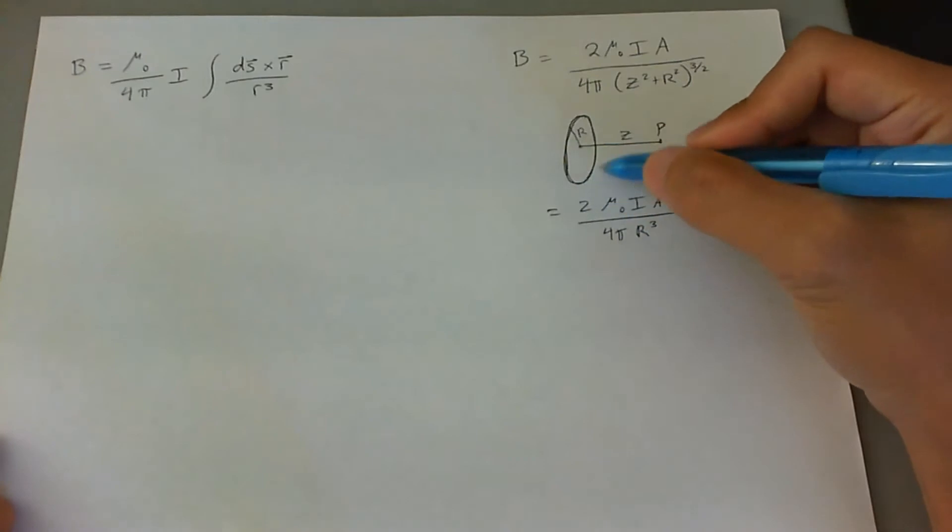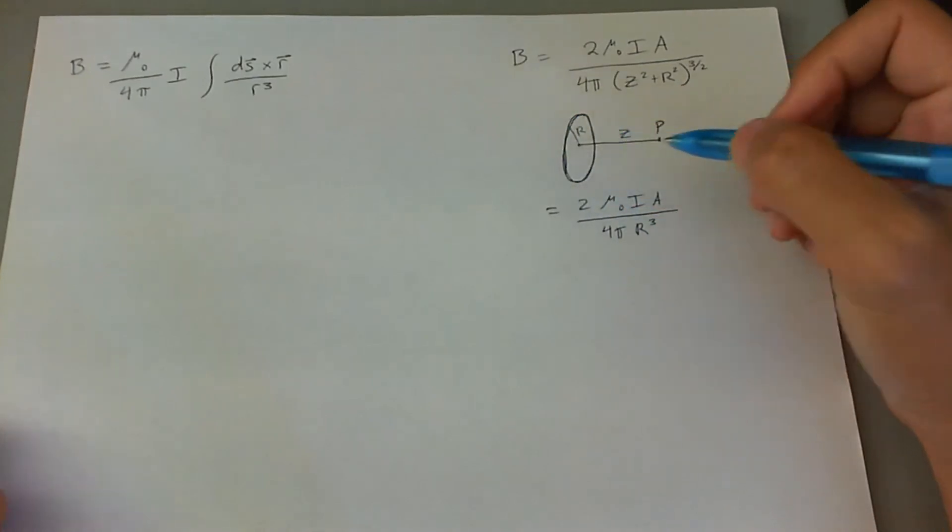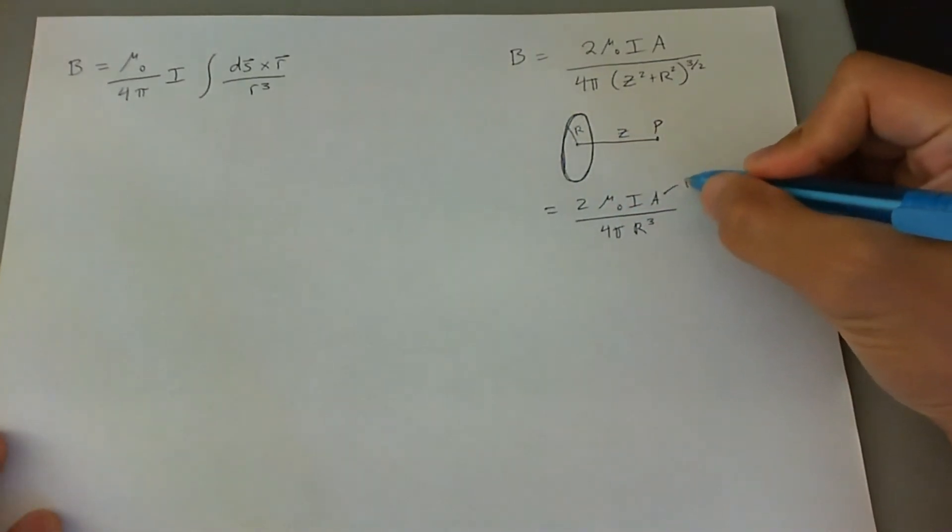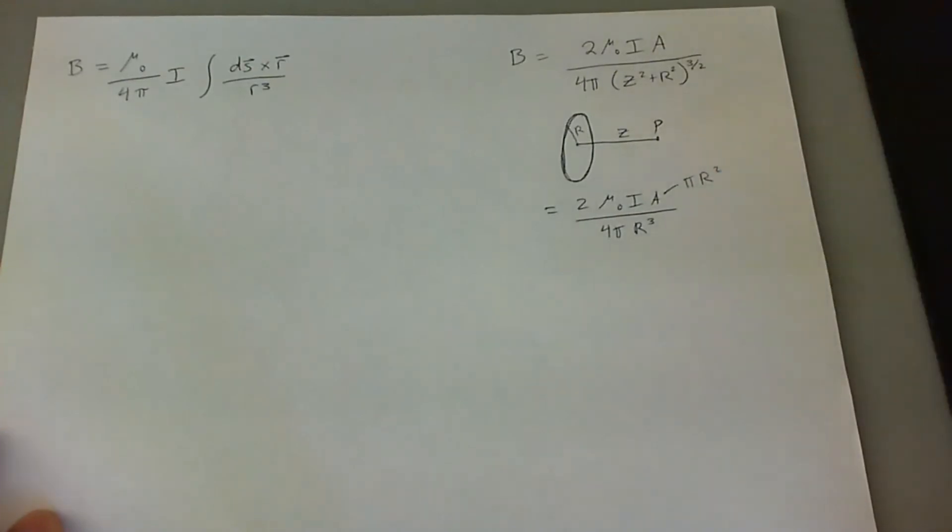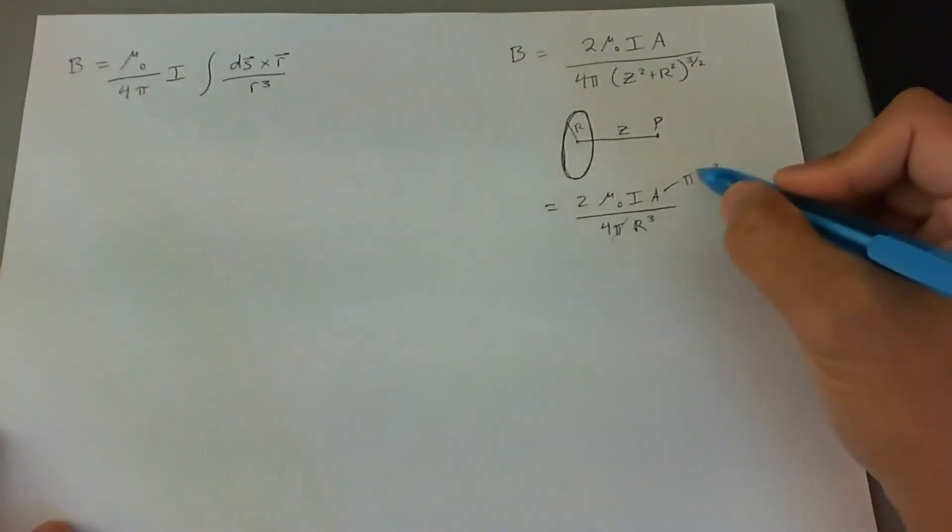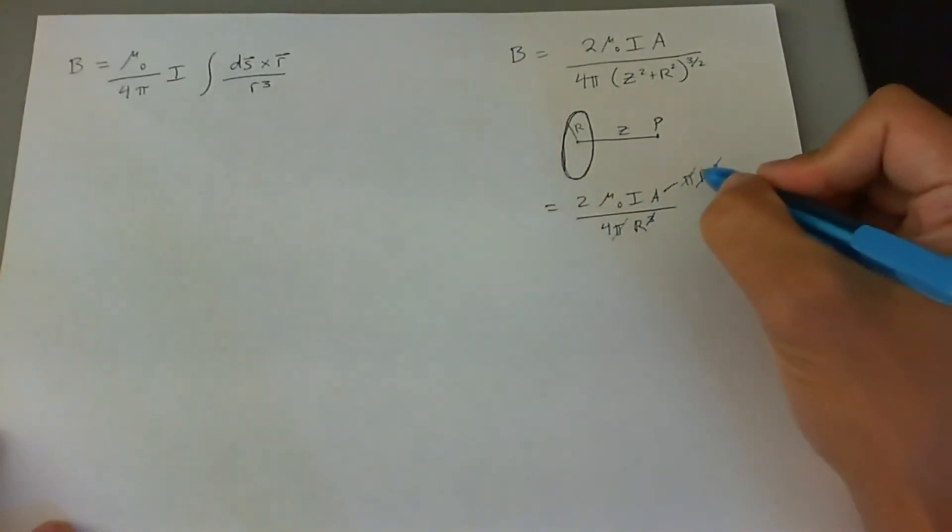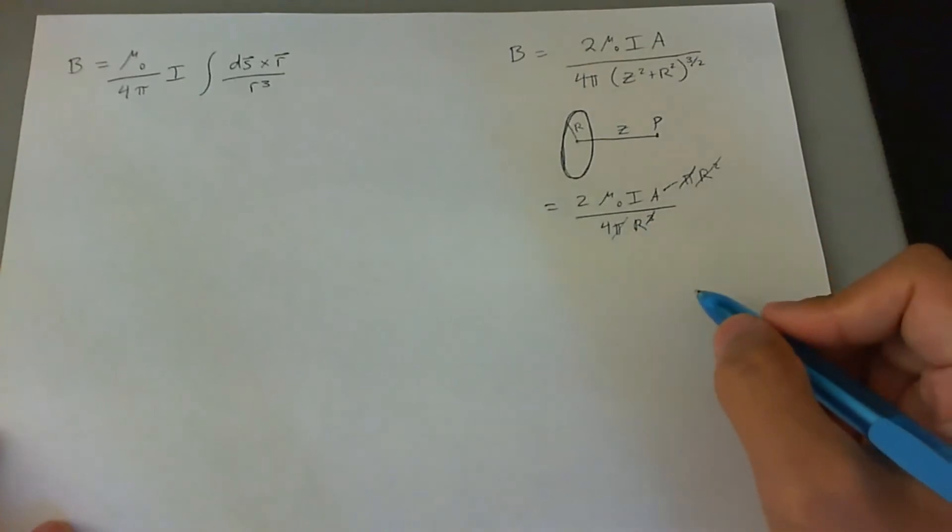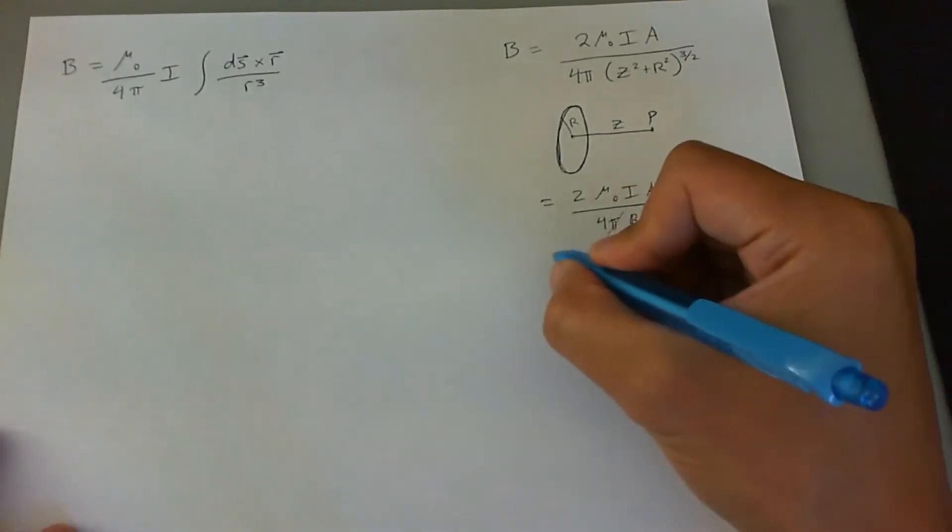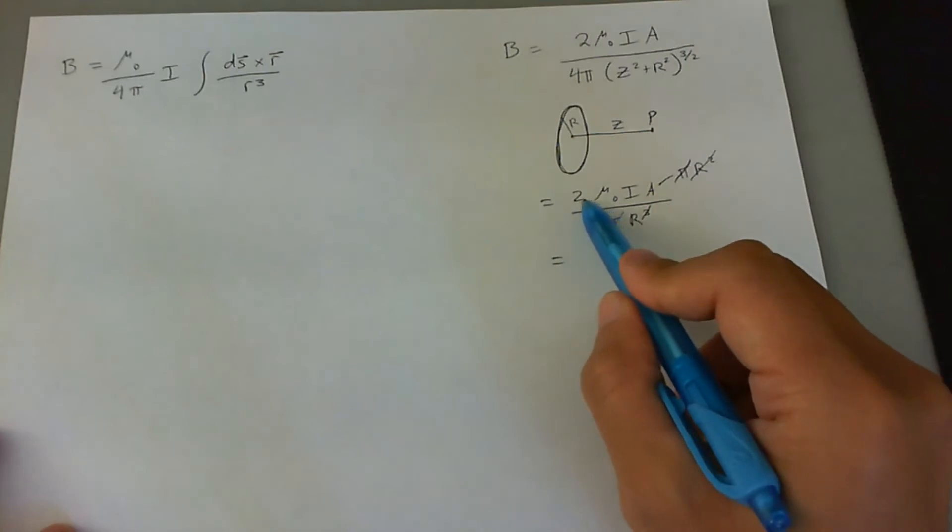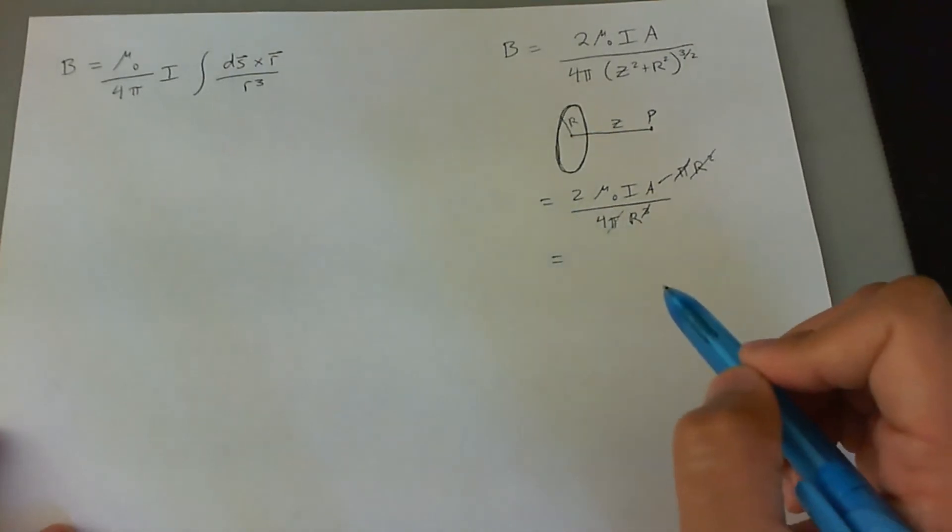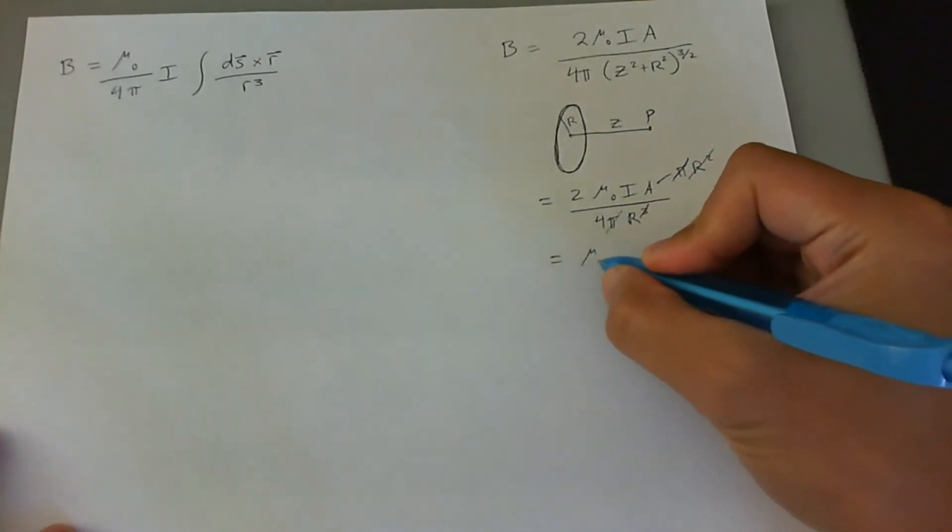You can also see that this circle, if it were a full circle, would have an area of pi r squared. We can plug that in, and the pi's will cancel out, and the squared r will cancel out with the cubed part of this r, leaving only one r in the denominator. We can also cancel out the two and make this half.